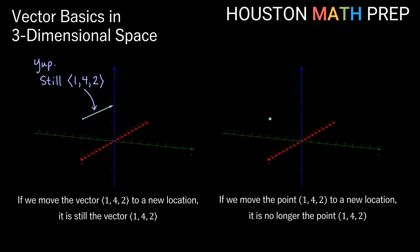In other words, that object still travels one unit in the x direction, four in the y direction, and two in the z direction from its beginning point to its ending point, from start to finish. So points are location-specific in 3D space, but vectors are not. It's a big difference there.